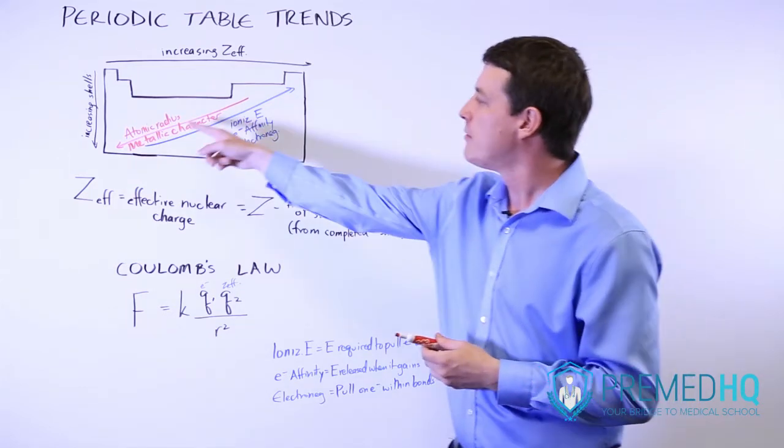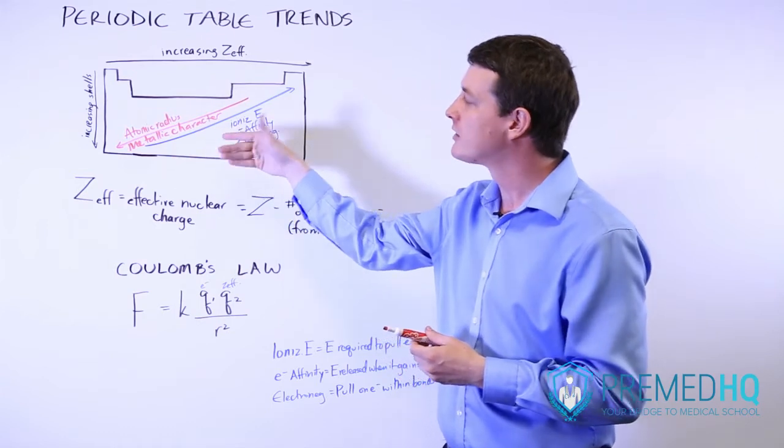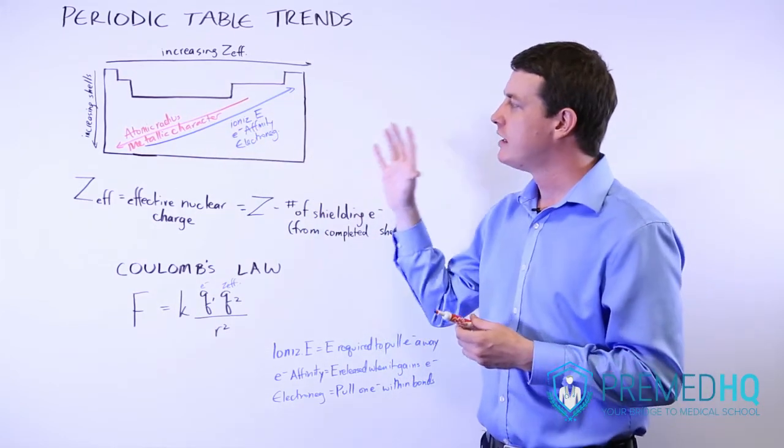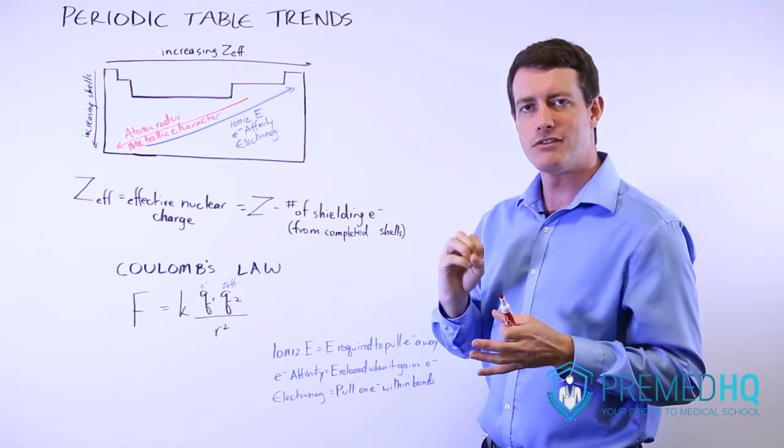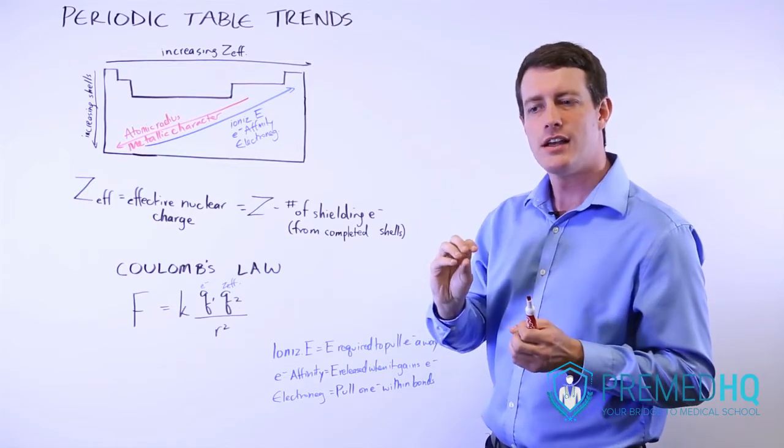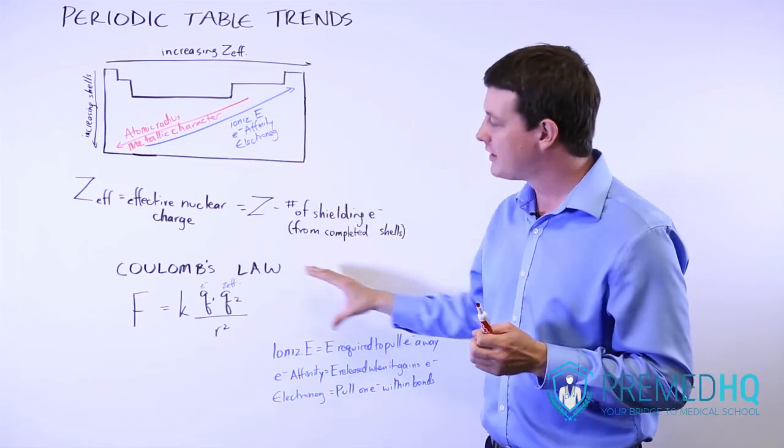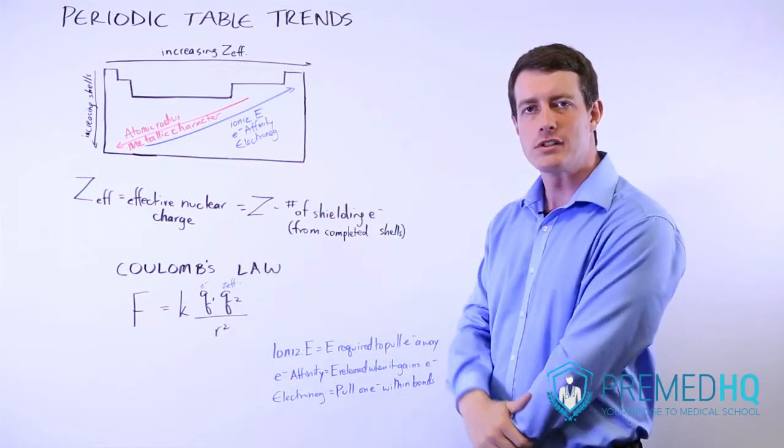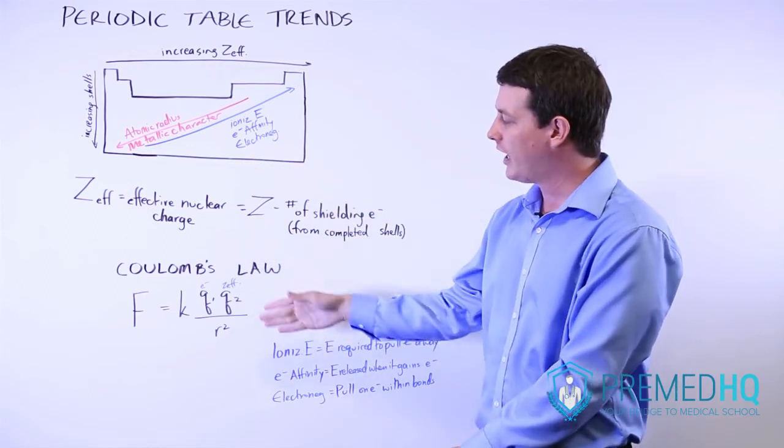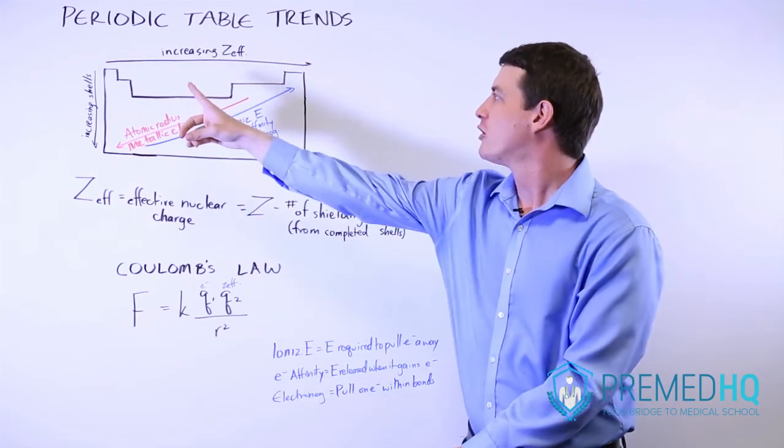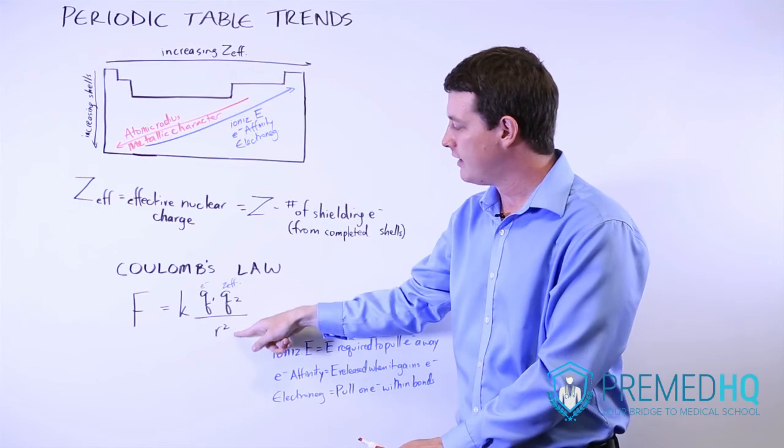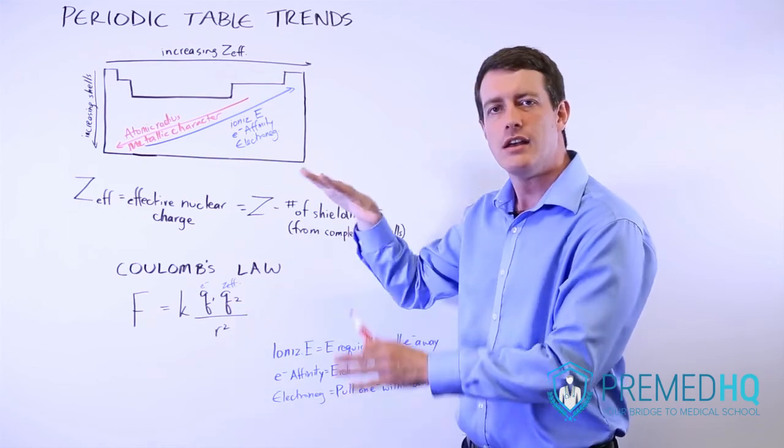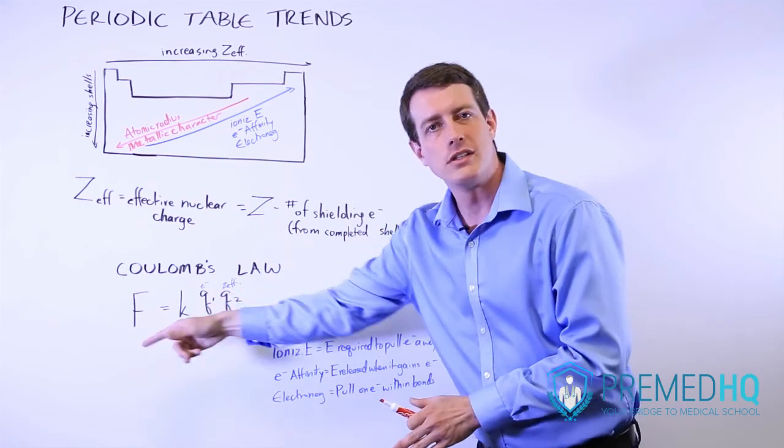And so once again, atomic radius and metallic character are both things that are enhanced by having a smaller attractive force between that nucleus and the outer layer electrons. All of this can be explained with Coulomb's law. And in effect, you're looking at the Z effective, which increases as you get to the right. And you want to see the amount of radius. You want that to be smaller in order to increase this force.